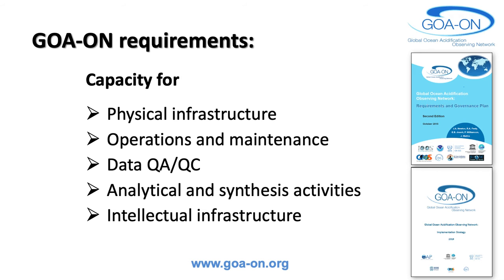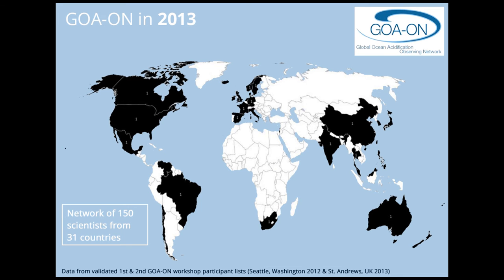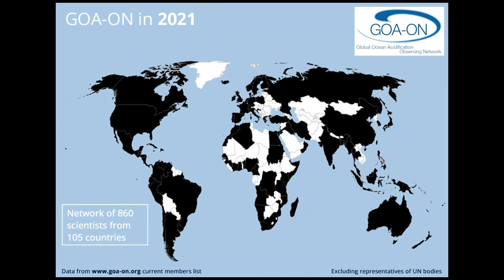As we started GO-ON in 2012, and then in 2013 with another workshop in St. Andrews, Scotland, there were 150 scientists from 31 countries, and it was a very imbalanced world view. GO-ON worked very hard at building that intellectual capacity, and we are now a network of over 860 scientists from 105 countries. It's really been due to a lot of effort to build that capacity.